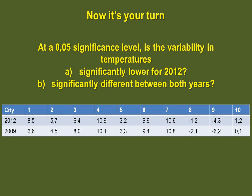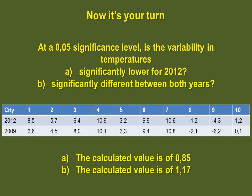Now it's your turn. At a 0.05 significance level, answer these two questions: is the variability in temperatures A) significantly lower for 2012, or B) significantly different between both years? The answer for A is that the calculated value is 0.85, and for B the calculated value is 1.17. I'll be looking to see all of your steps before the beginning of the next class.